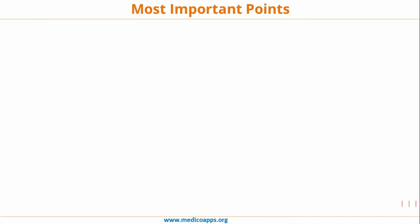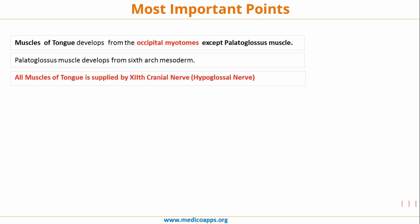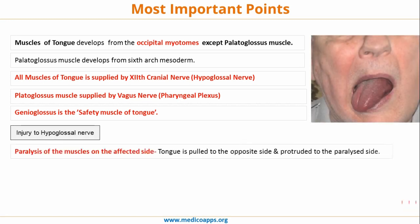Let's look at the most important points asked across various entrance examinations. Muscles of tongue develop from occipital myotomes; the only exception is the palatoglossus muscle, which develops from the 6th pharyngeal arch. All muscles of tongue are supplied by the 12th cranial nerve — the hypoglossal nerve — except palatoglossus, which is supplied by the motor component of the vagus nerve via pharyngeal plexus. Genioglossus is called the safety muscle of the tongue. Injury to the hypoglossal nerve leads to paralysis of the muscle on the affected side, so the tongue is pulled to the opposite side and protruded on the paralytic side — if the tongue deviates to the right, the injury is to the left hypoglossal nerve.